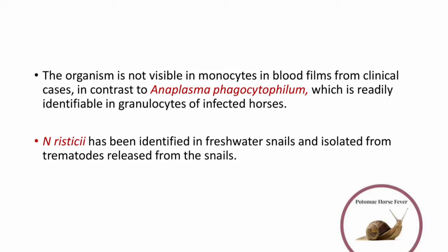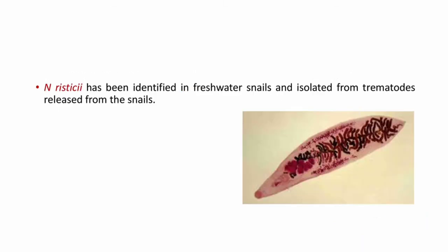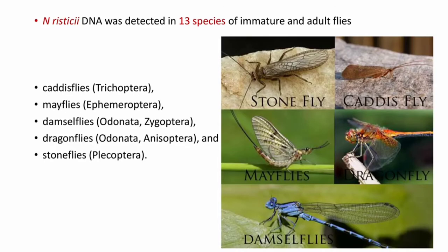Neorickettsia risticii has been identified in freshwater snails and isolated from trematodes released from snails. This explains why this disease is more common in pastures close to rivers or creeks.